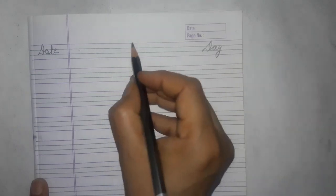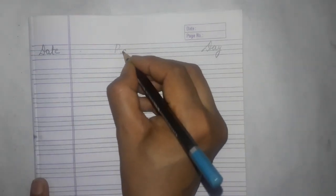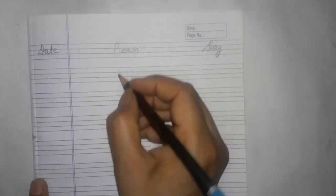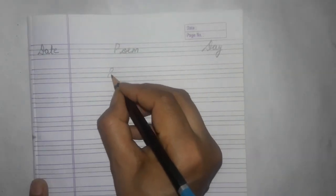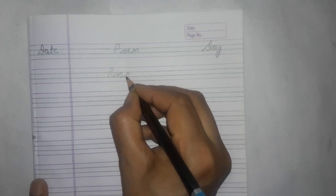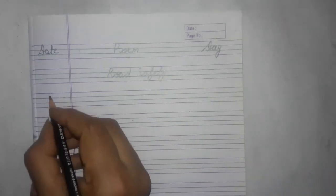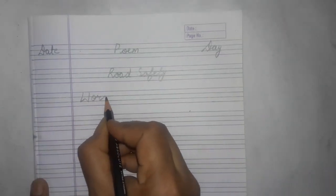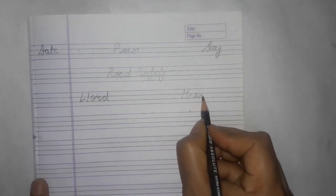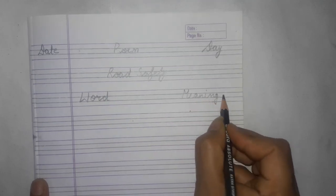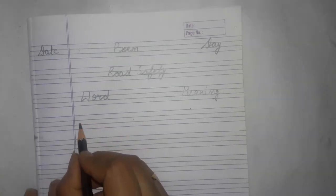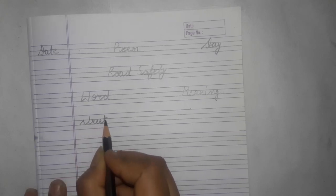First of all, make the format. The date is here, the day is here. And this is a poem, no lesson number is included in it. So I write the name of the poem: Road Safety. I will write over here word meaning.